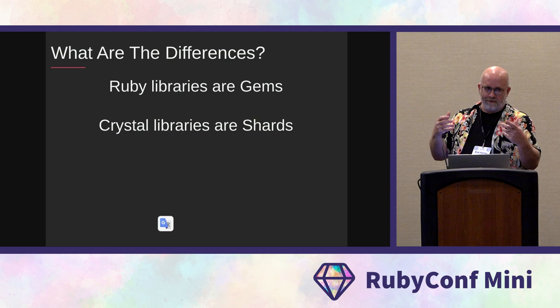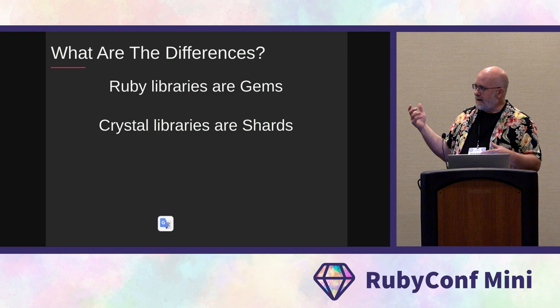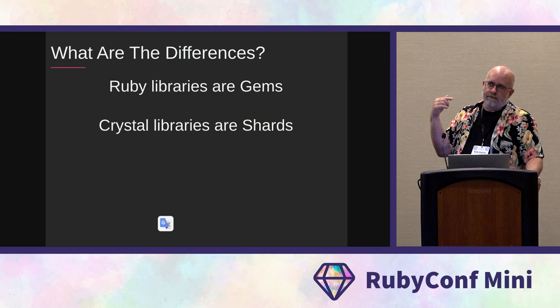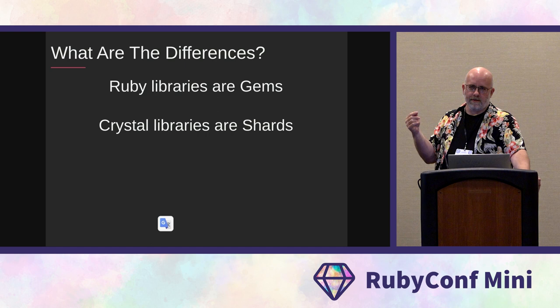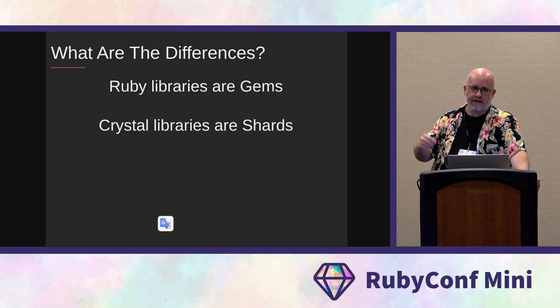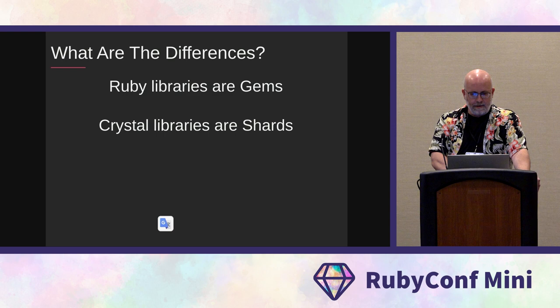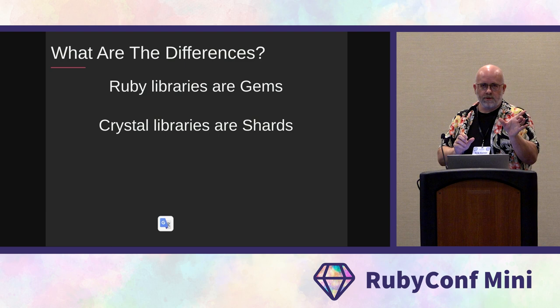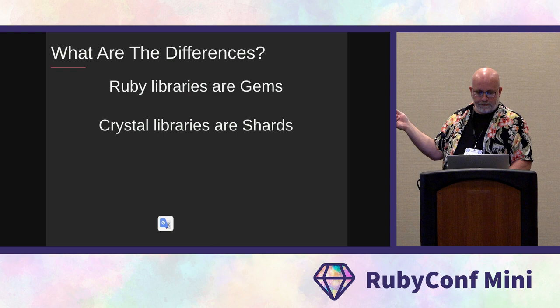Ruby libraries are gems; Crystal libraries are shards. Just like Ruby has a gem command, Crystal has a shard command. The actual low-level management is a little different because shards uses a YAML file to describe everything — because Crystal is not a dynamic interpreted language, you can't describe your library in code within it, so it's described in YAML. Just like Ruby has bundler, Crystal has tooling inherent in the language to allow you to do a lot of the same things you do with bundler and shards.